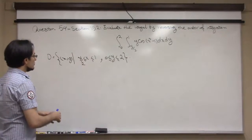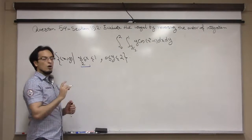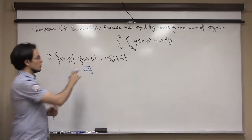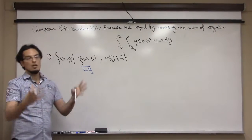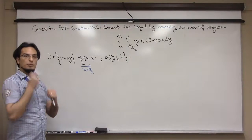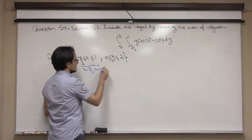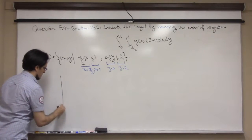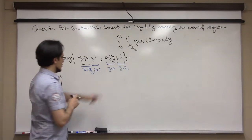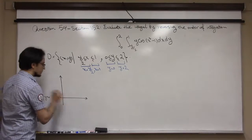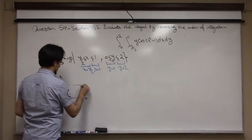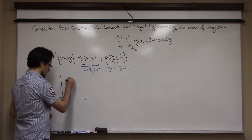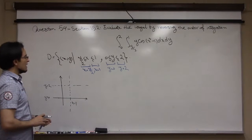To sketch the region, draw all the boundaries by changing the inequalities to equalities. You get four equations: x = 1, y = 0, y = 2, and x = y/2. Draw them and pick your region from there. So I have my axes — y = 0 is the x-axis, y = 2 is a horizontal line, and x = 1 is a vertical line.